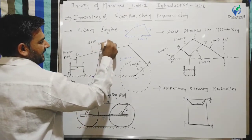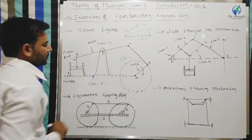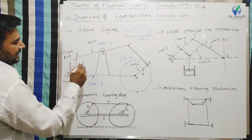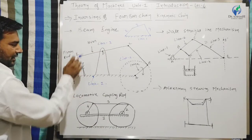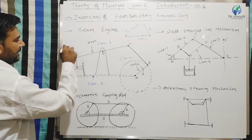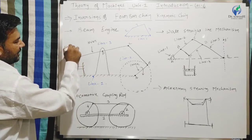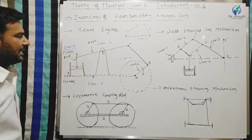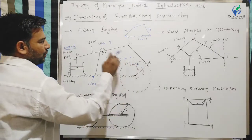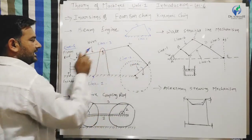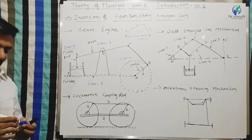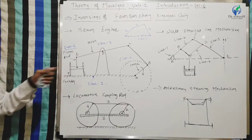Link 3 is a piston, which is a piston rod. Link 4 is a link. Links 1, 2, 3 and 4 are 4 links.